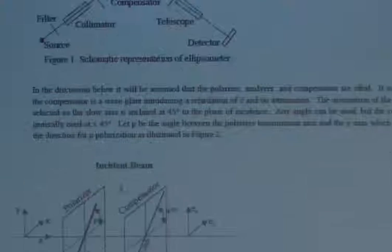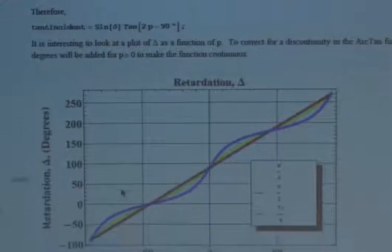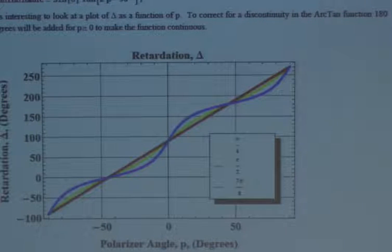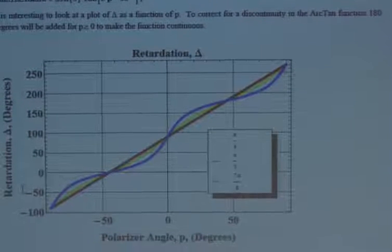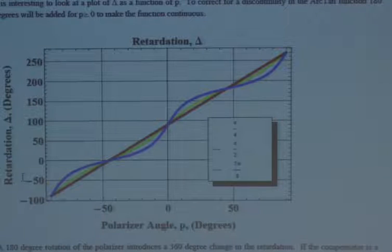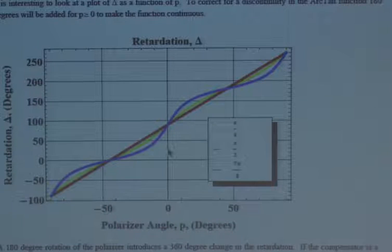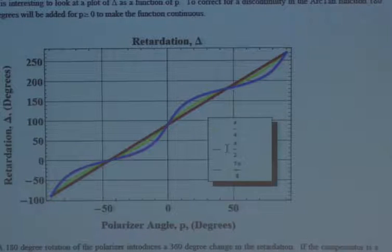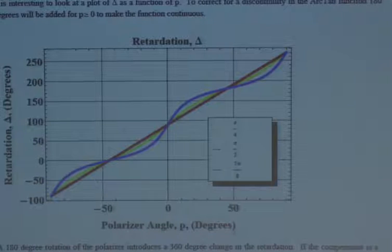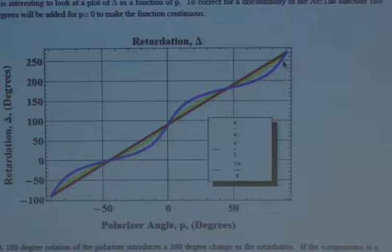As we rotate the polarizer through 180 degrees, the retardation of the light incident upon the sample changes through 360 degrees. What's really remarkable is that if the compensator is a quarter-wave plate — 90 degrees of retardation between S and P — there will be a linear relationship between polarizer angle P and retardation. That's an amazing result.